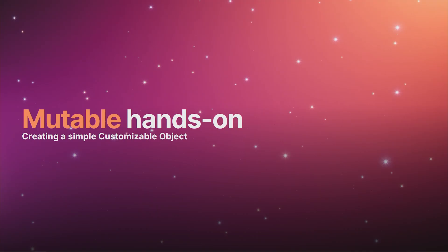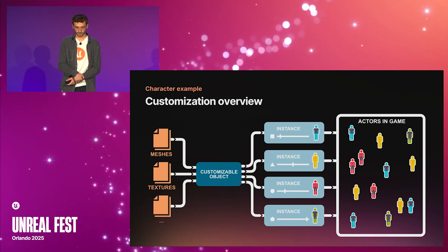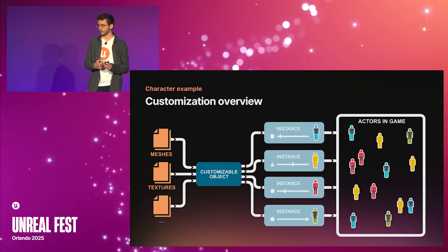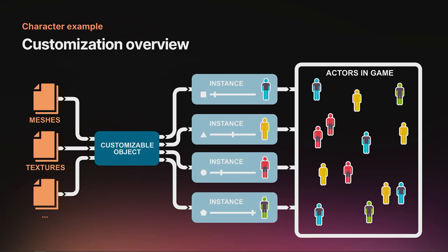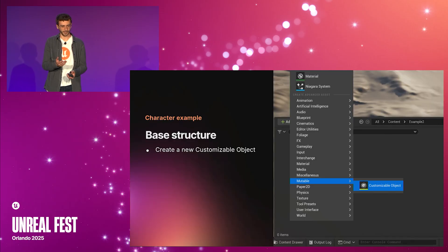Now that we've seen what Mutable does, we're going to create a simple character customization. Here is an overview: first, we will take the skeletal meshes and textures, then create a new customizable object that specifies how to combine them. Next, we'll instantiate the customizable object specifying which particular customization we want, and finally drop the instance into the level to create an in-game actor.